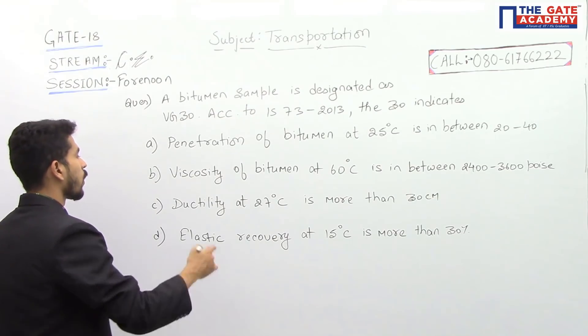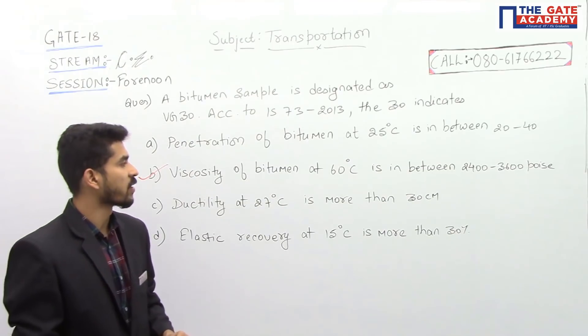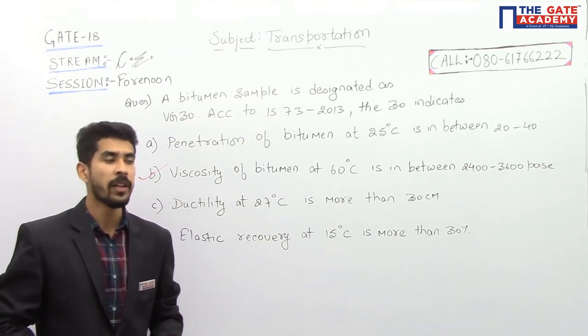So the correct option over here is option B: viscosity of bitumen at 60 degrees is in between 2400 to 3600 poise.